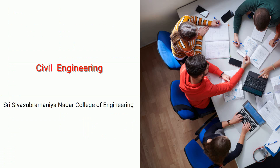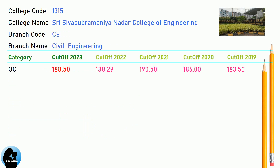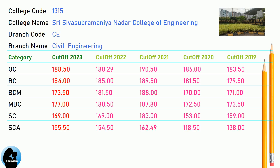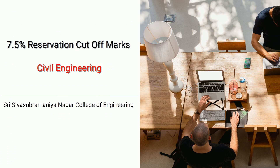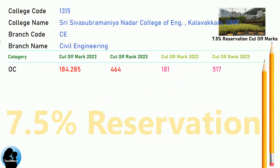DNA Cut-Off for Shree Ipsubramania Nadar College of Engineering in Biomedical Engineering. DNA 7.5 Reservation Cut-Off for Shree Ipsubramania Nadar College of Engineering in Biomedical Engineering. DNA 1 Cut-Off for Shree Ipsubramania Nadar College of Engineering in Biomedical Engineering.